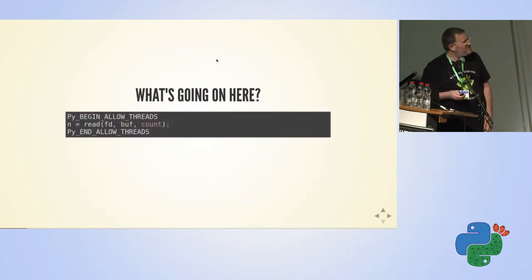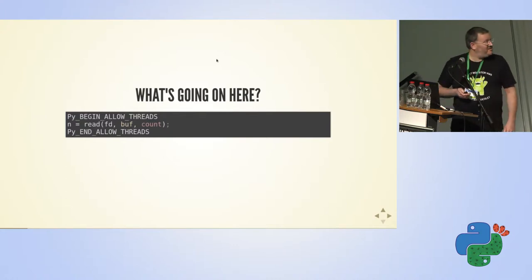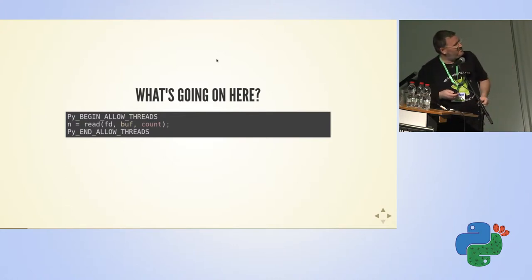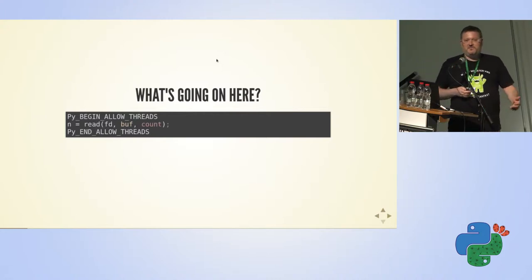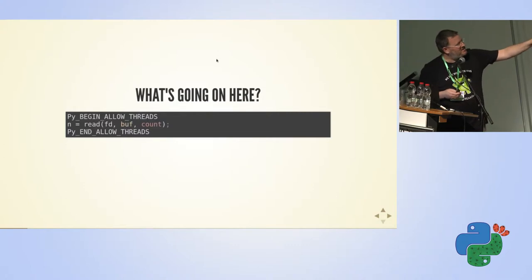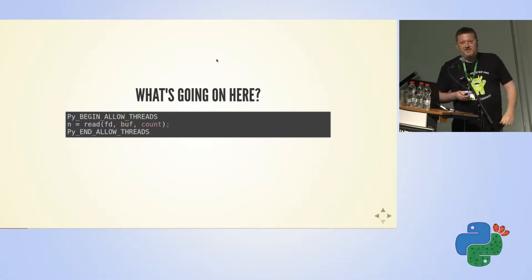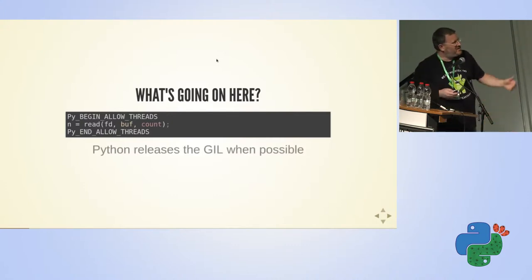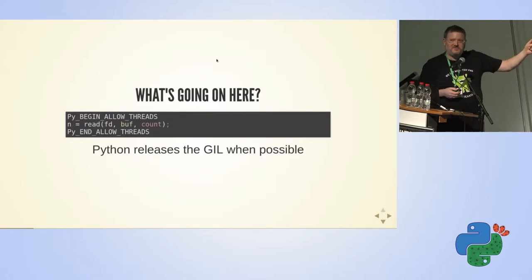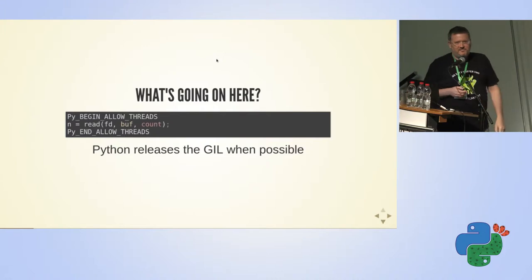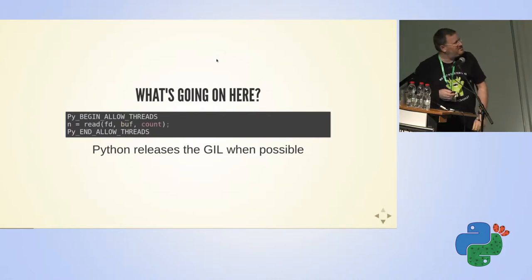But if we look inside the Python interpreter code, we can see that whenever Python calls blocking system calls or some other C code that does not need to access Python internals, we release the GIL. This is where all threads release the GIL. And when the call returns, we take the GIL again. So actually we can run while this thread is blocked — we can run Python code in another thread, or we can have a lot of threads waiting on blocking calls.